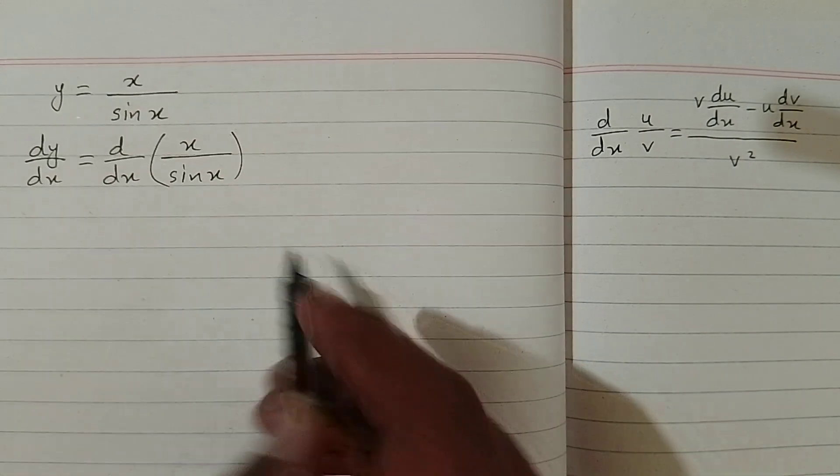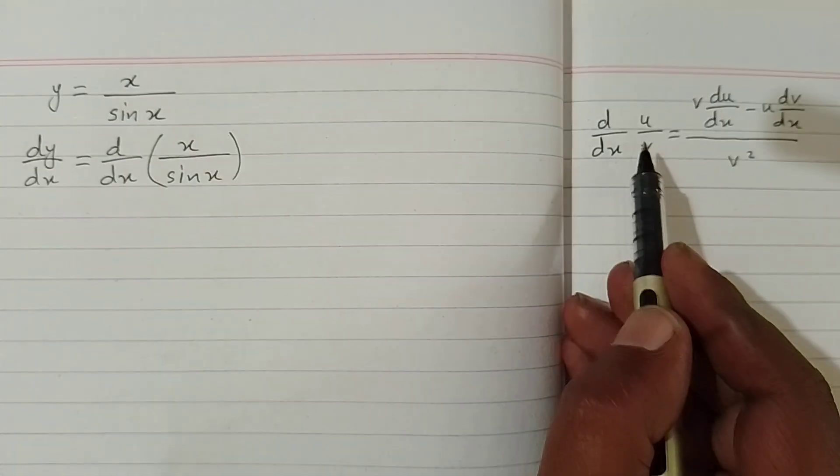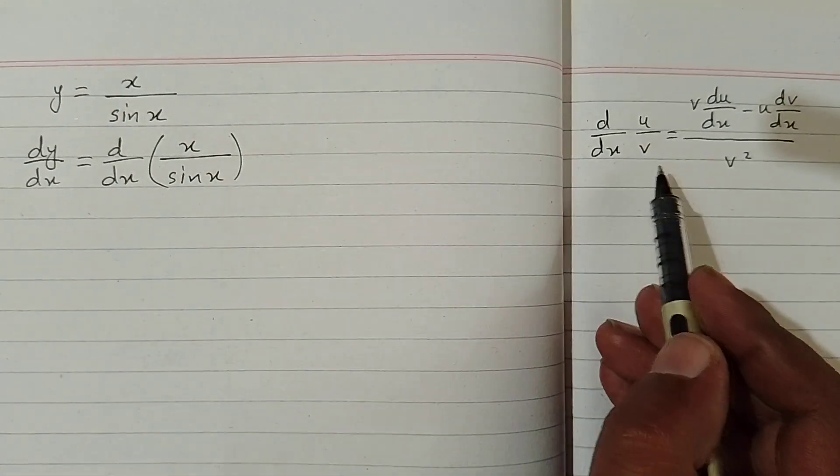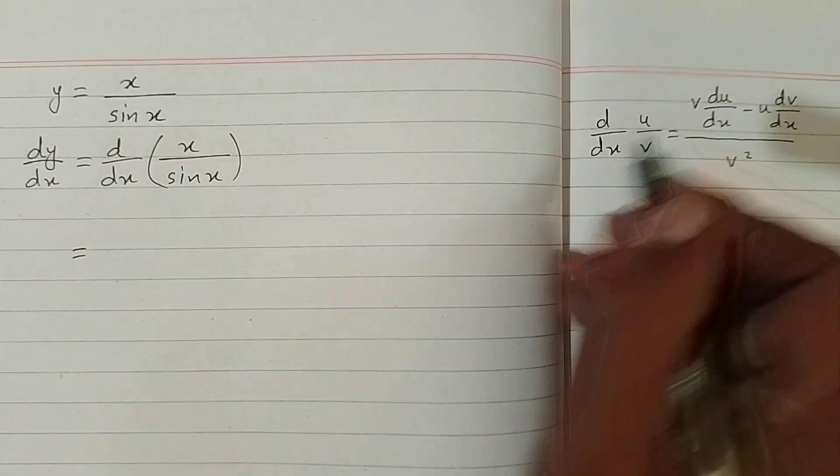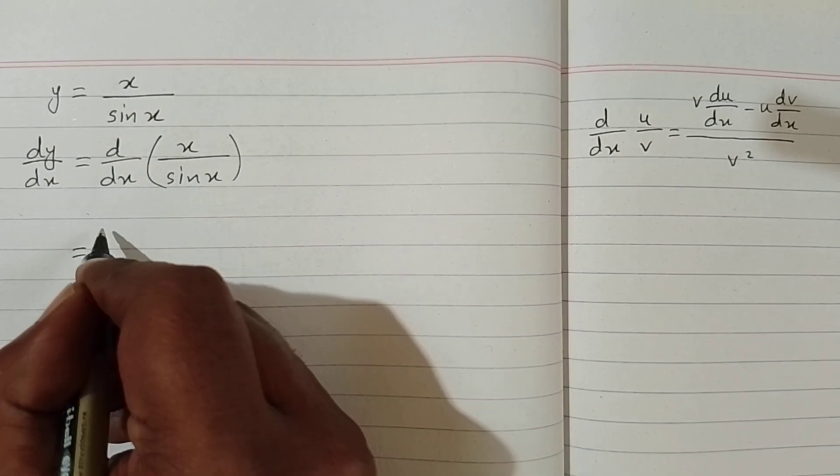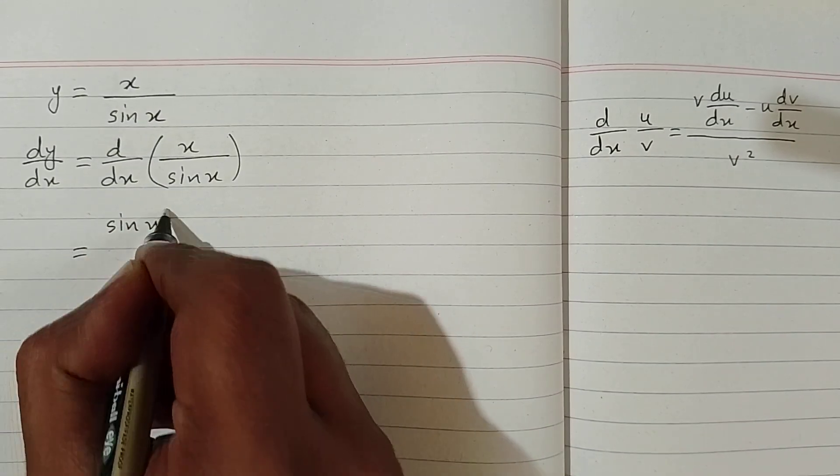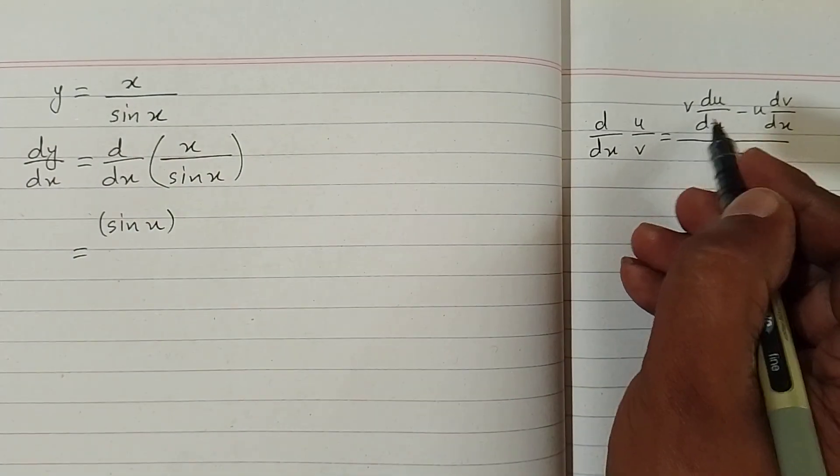So we can see that we have x in place of u and sin x in place of v. So first we will write v which is sin x, and then the derivative of u.